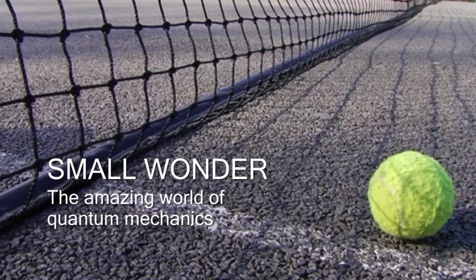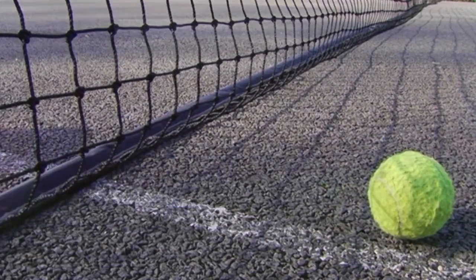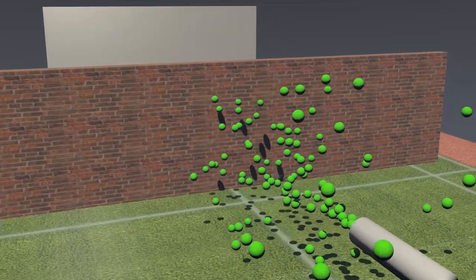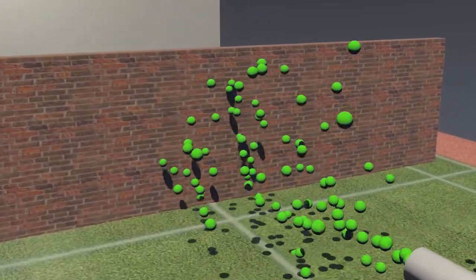We're going to look at something called the double slit experiment. If we remove the net from our tennis court and replace it with a brick wall, well, our tennis balls won't get very far.